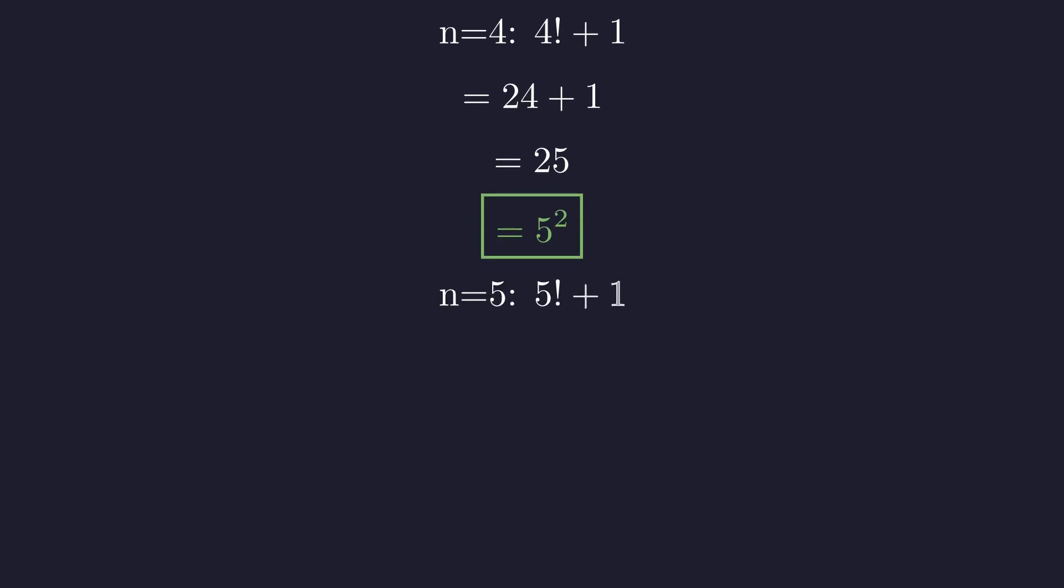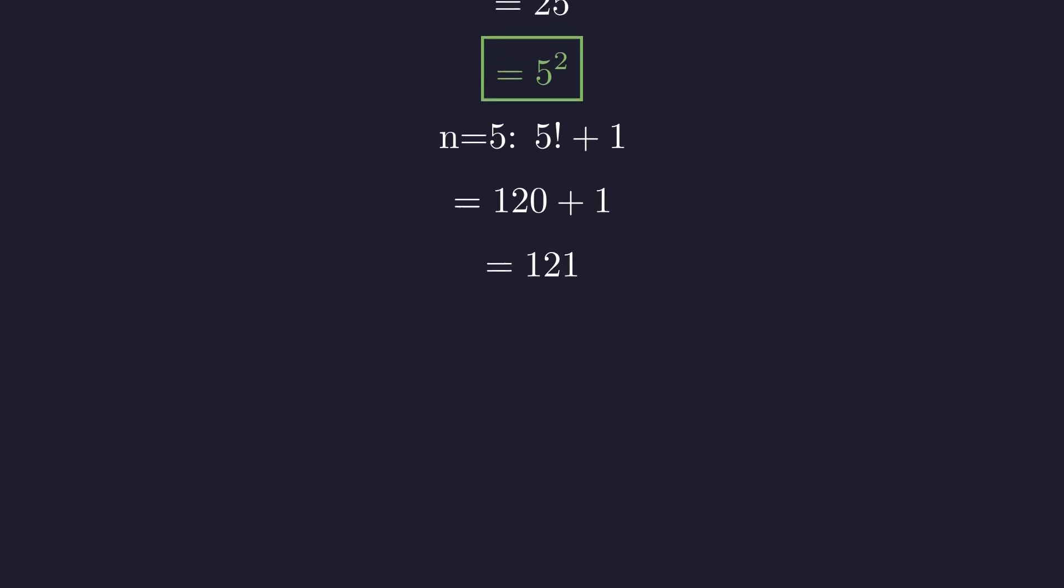Let's try n equals 5. 5 factorial is 120. Adding 1 gives 121, which is 11 squared. Another solution.